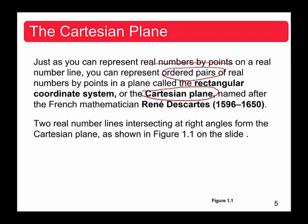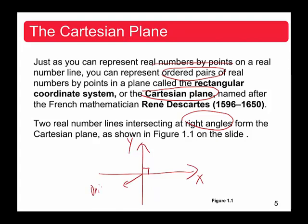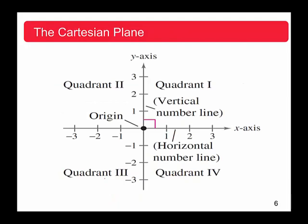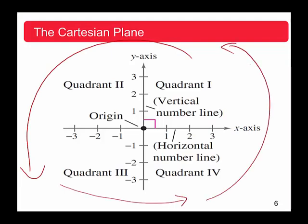Two real number lines intersect at right angles on the Cartesian plane — the x-axis and y-axis — and their intersection is the origin. The x-axis and y-axis divide the entire space into four different quadrants. Going counterclockwise, the first quadrant is where both x-coordinate and y-coordinate are positive.